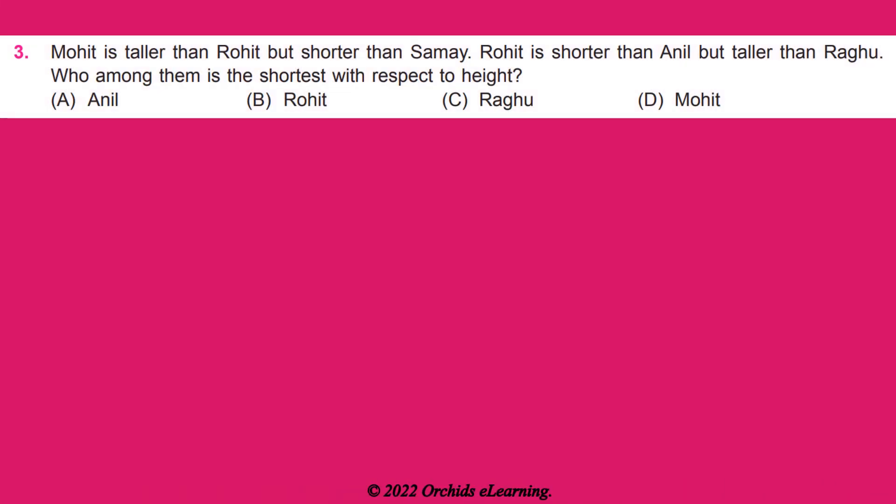Mohit is taller than Rohit but shorter than Simayu. Rohit is shorter than Anil but taller than Raghu. Who among them is the shortest with respect to height? Answer: C — Raghu.